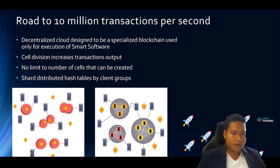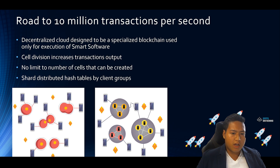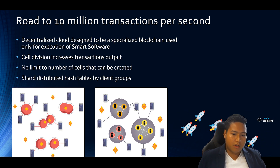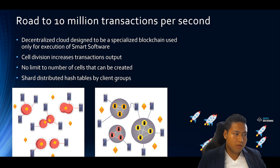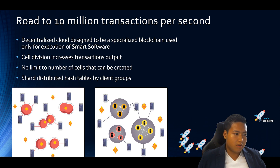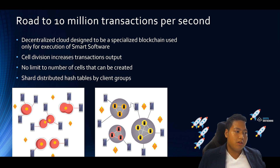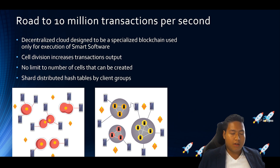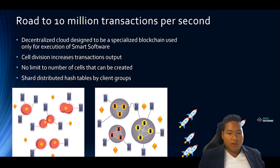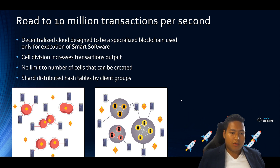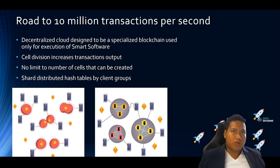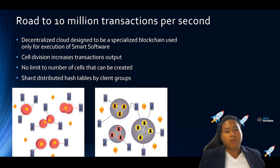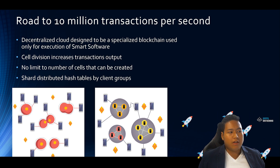They also utilize sharding of distributed hash tables by client group. On the right table, you'll see that each gray circle represents one group, so each node cluster is isolated from another, allowing them to run independently. Data is kept safe within their own distributed hash table. This protects privacy and security because each cell only needs the data from its own cell to operate, and won't necessarily leak out to other nodes.